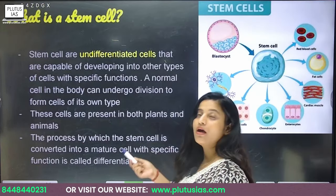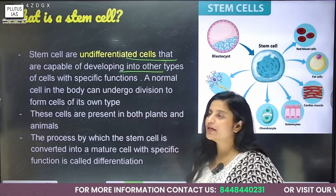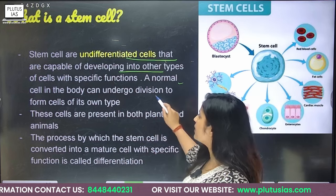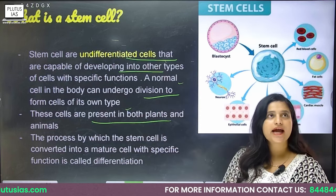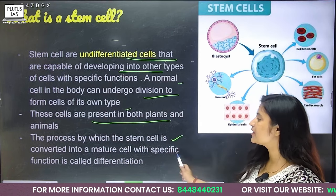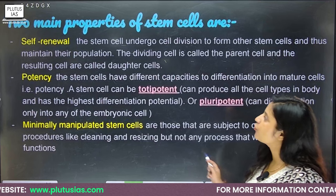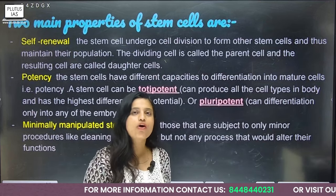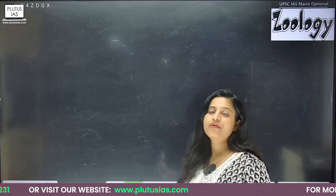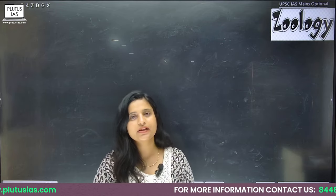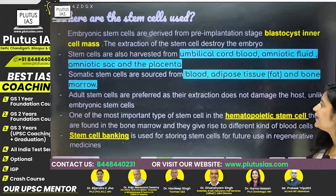Now going through the PPT summary: stem cells are undifferentiated cells capable of developing into other cell types with specific functions. A normal cell can only divide into cells of its own type, but stem cells are present in both plants and animals. The process by which stem cells convert into mature cells with a specific function is known as differentiation. The two main properties of stem cells are self-renewal and potency. The types discussed are totipotent, pluripotent, multipotent, oligopotent, and unipotent.